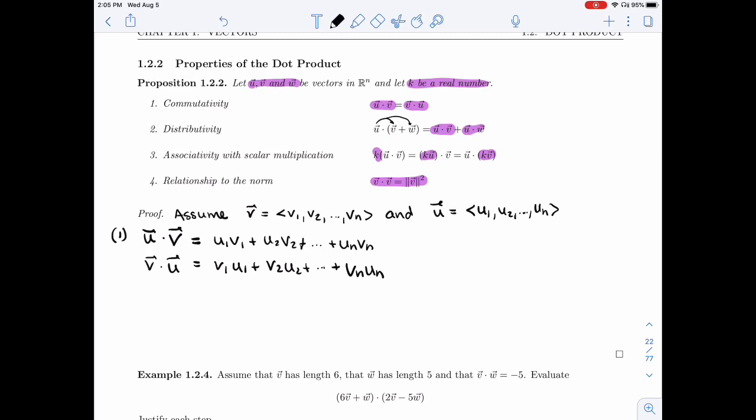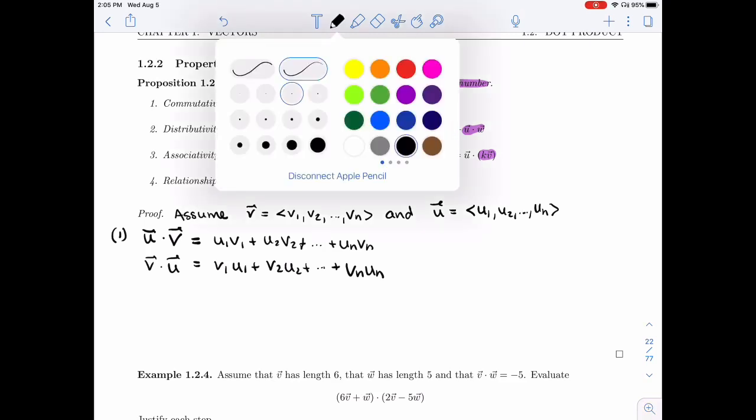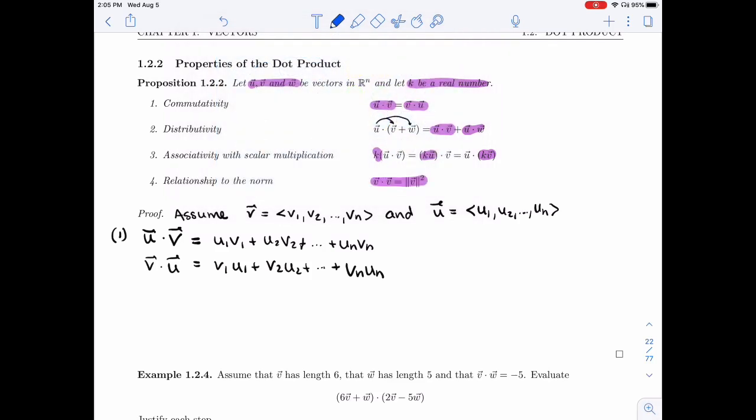The only difference between the two is the order of the u1 versus v1. Now, these two I claim we know they're equal because these components, u1, u_n, v1, v_n, those are not vectors, they're real numbers.